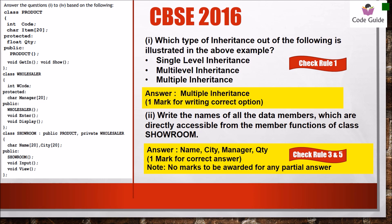From CBSE 2016, multiple inheritance is depicted because the showroom class is derived from both product and wholesaler classes. To write the names of all data members directly accessible from the member function of class showroom, apply rules 3 and 5. The data members of class showroom are name, city, manager, and quantity — with quantity derived from the base class. There are no marks for partial answers; you must write all four to get the correct answer.